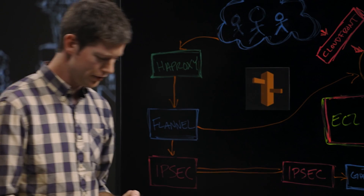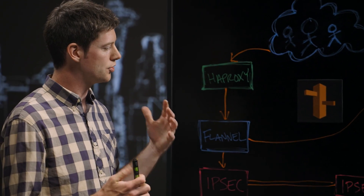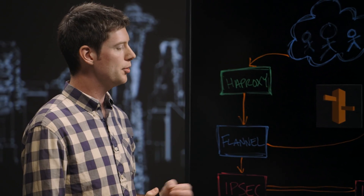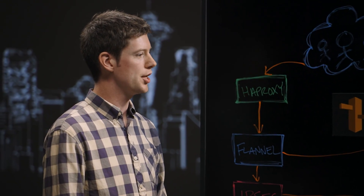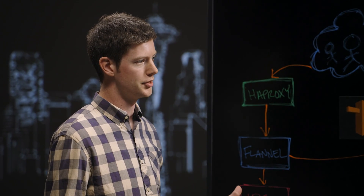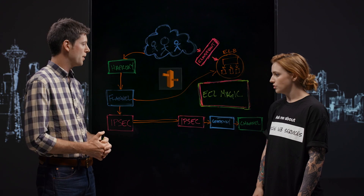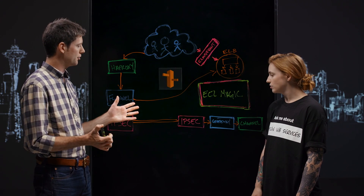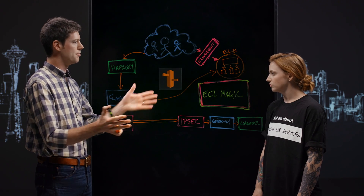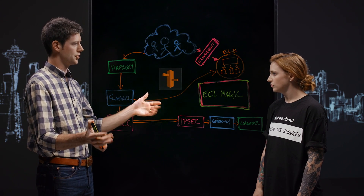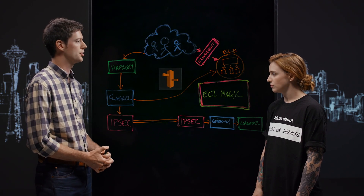The purpose of these two services in conjunction is to allow us to scale the number of users in a channel beyond the number of sockets that can exist on a single EC2 instance. By fanning out messages from one gateway to many channel servers and vice versa, we can have millions of users in a channel.